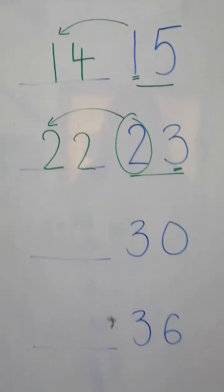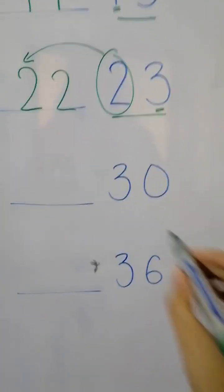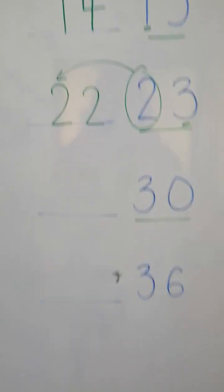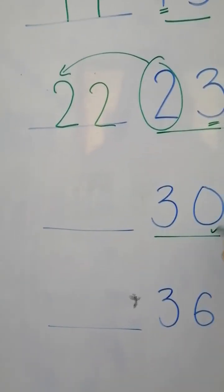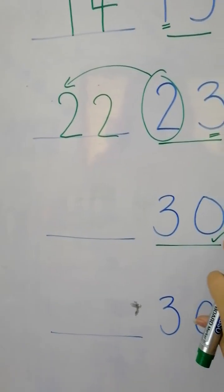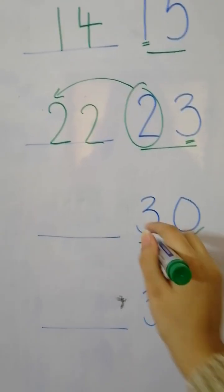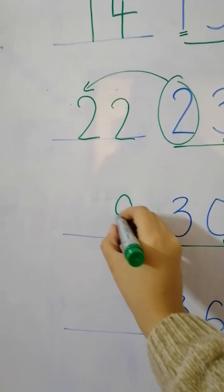Next we have thirty. Do we have zero here? Yes, we do. In the place of zero we will write nine.